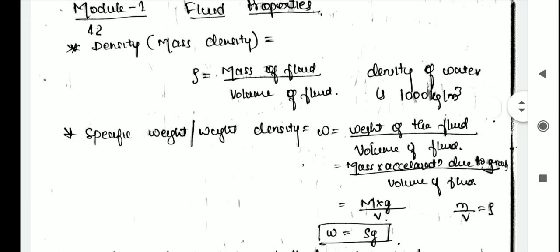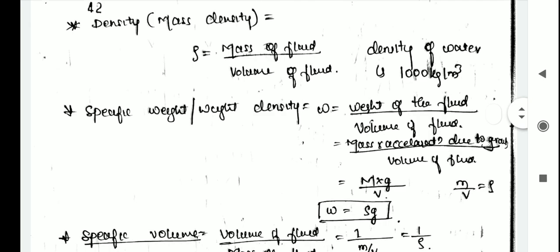The next property is specific weight, which is the ratio of weight of the fluid to the volume of the fluid. Weight equals mass into acceleration due to gravity, so specific weight equals M times G divided by V. Since M divided by V is rho, specific weight becomes W equals rho into G.